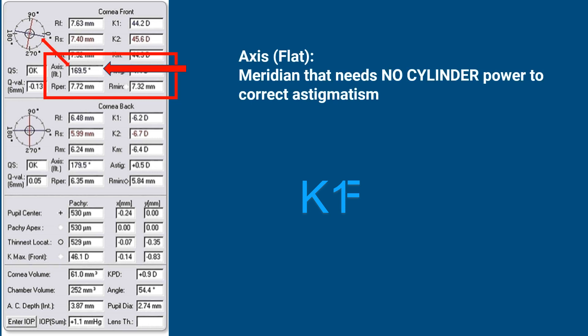This value is the axis of the flat meridian, which means the axis of K1. It is also presented in black on the map, so they should correspond — for example, here it is roughly 169 and it is 169.5 there as well. This is the flat axis meridian, which needs no cylindrical power to correct the astigmatism.